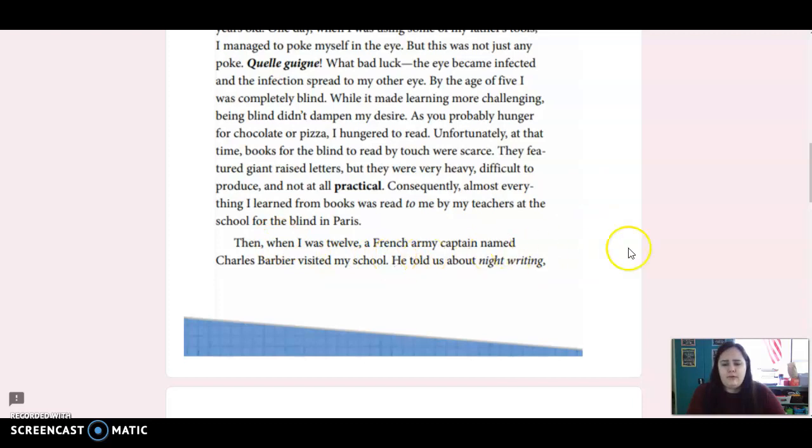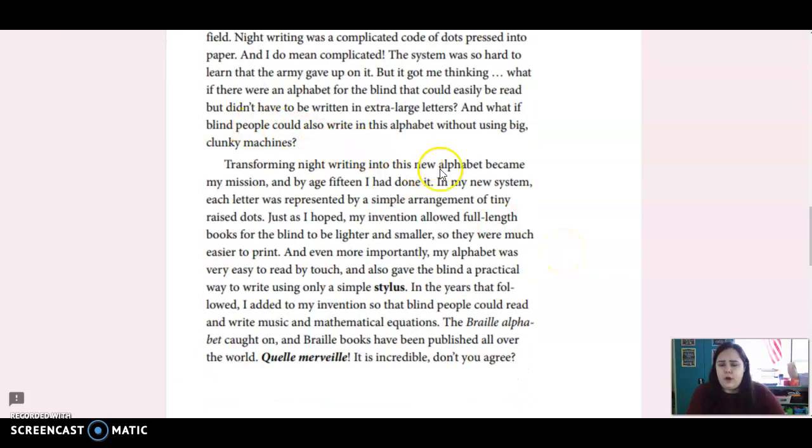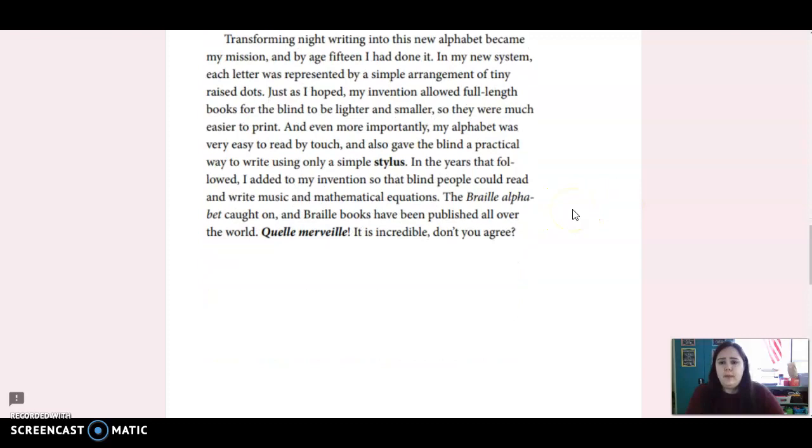Then, when I was 12, a French army captain named Charles Barbier visited my school. He told us about night writing, a communication system he'd invented for soldiers on the battlefield. Night writing was a complicated code of dots pressed into paper, and I do mean complicated. The system was so hard to learn that the army gave up on it. But it got me thinking: what if there was an alphabet for the blind that could easily be read, but didn't have to be written in extra large letters? And what if blind people could also write in this alphabet without using big clunky machines? Transforming night writing into this new alphabet became my mission, and by age 15, I had done it.